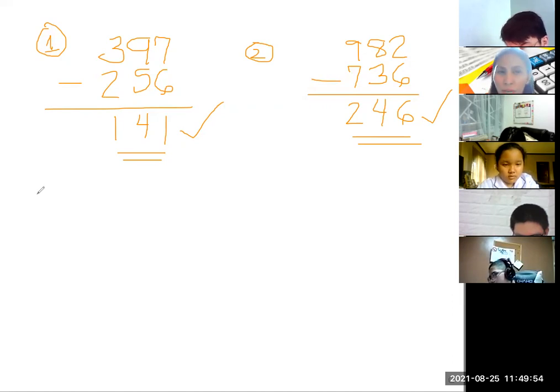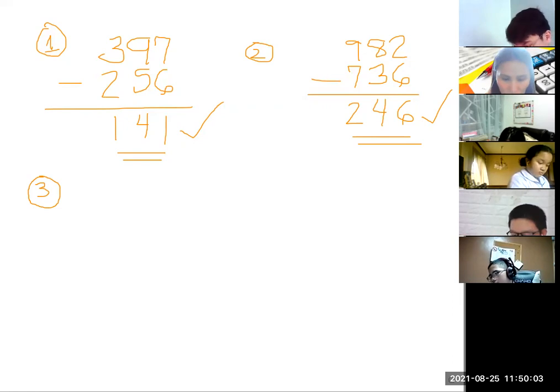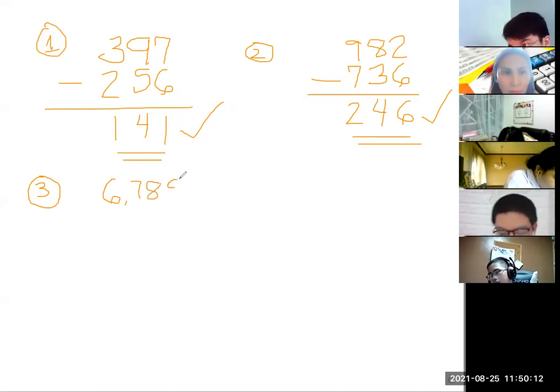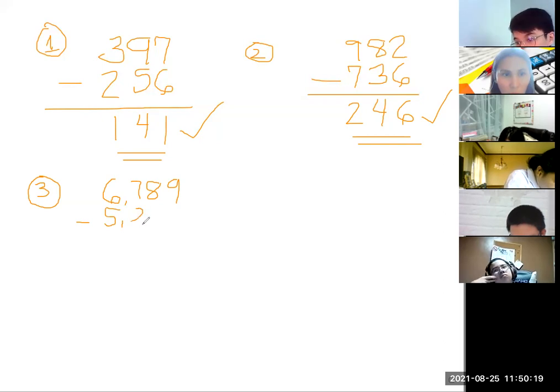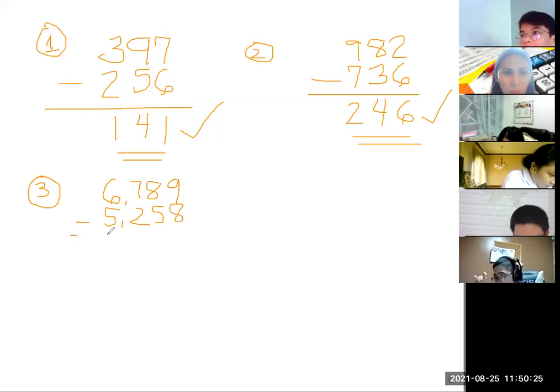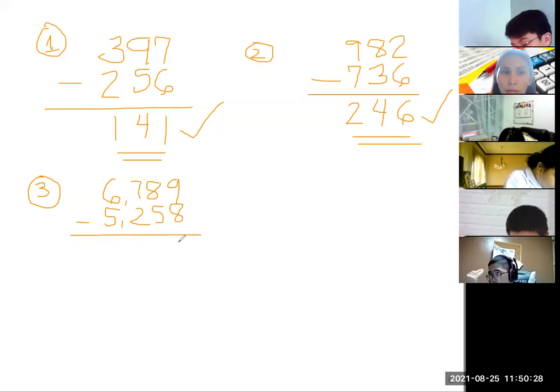Please check your own work and have it corrected. Next for number 3, 6,789 minus 5,258. 9 minus 8 we have 1, 8 minus 5 is 3, 7 minus 2 is 5, and 6 minus 5 is 1.